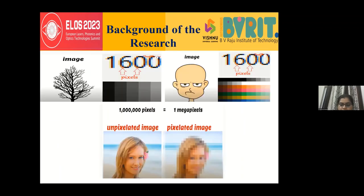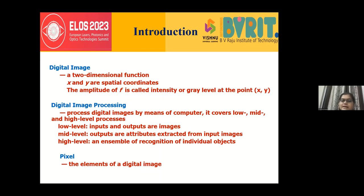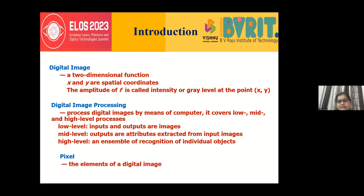Image processing can be categorized into three levels: low, mid, and high. At the low level, the input is an image and the output is also an image. At the mid level, you input an image and extract attributes such as segmentation. At the high level, you input an object and perform recognition on that object.